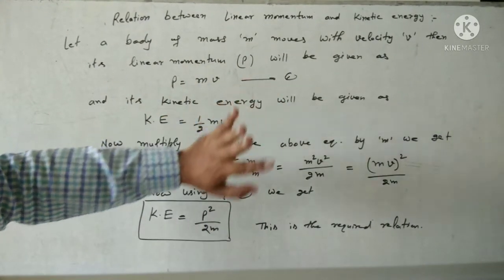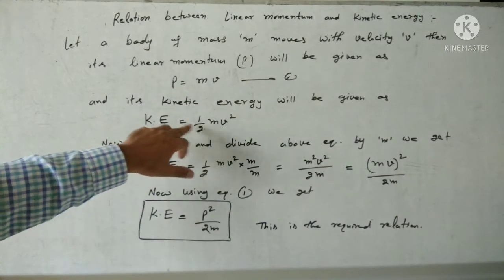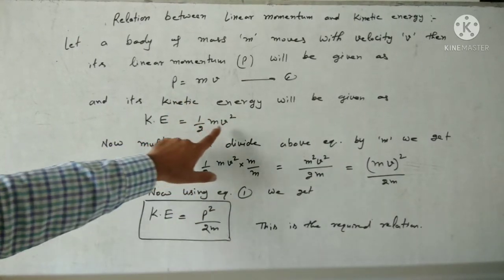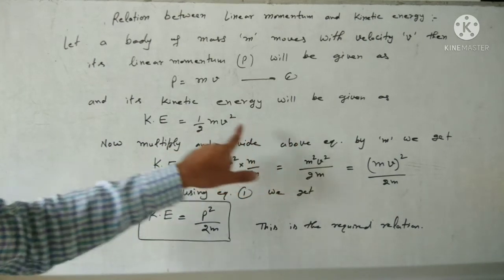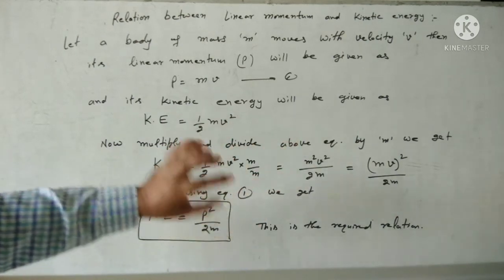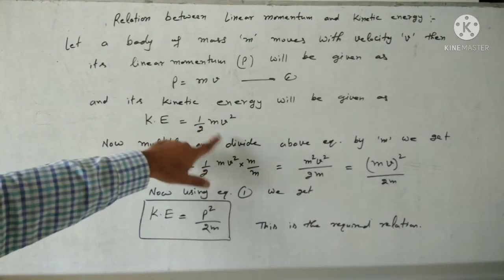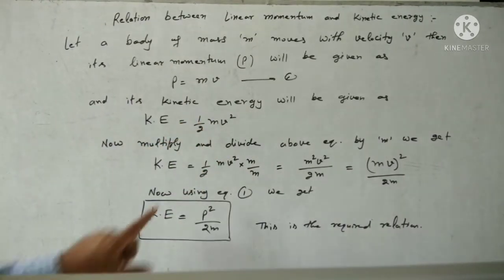And kinetic energy will be given as KE equals half M V square. Now this kinetic energy expression we will multiply and divide by M.